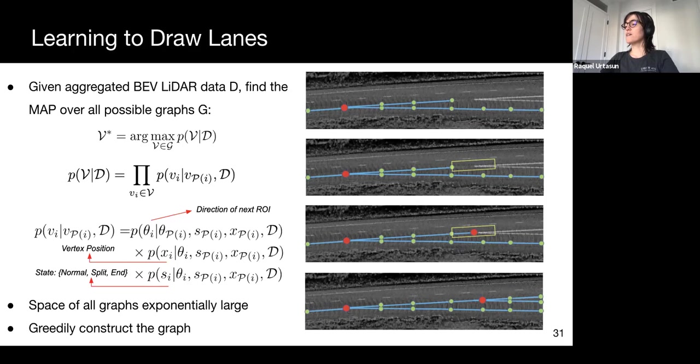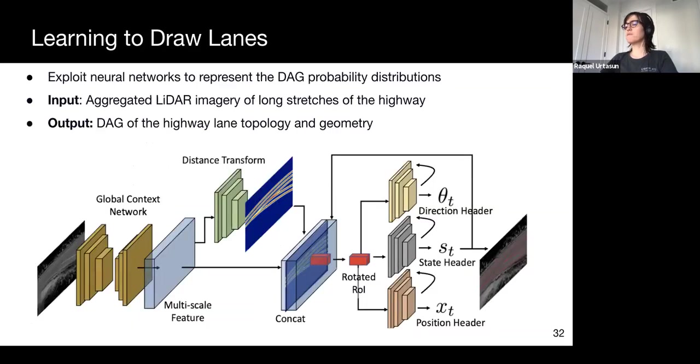We demonstrate the inference process with the figures on the right. On the top, assume we have the already inferred DAG at the current timestamp. Next, we find the direction of the next vertex highlighted in the yellow rotated region of interest, or ROI. Then, we infer the position of the vertex in the ROI and its state, which is inferred to be a fork. At this fork, we continue drawing the current lane boundary as this, but emanate a new one corresponding to the new lane boundary at the fork. These probability distributions are complicated. As such, we use neural networks to approximate them.